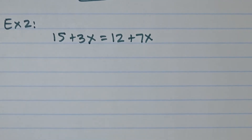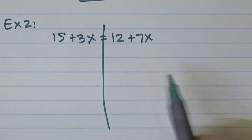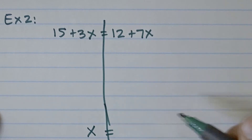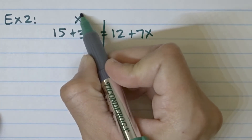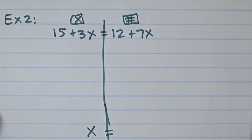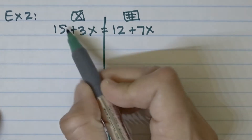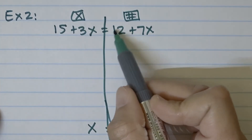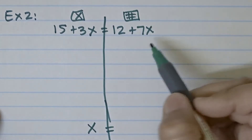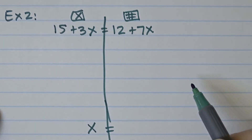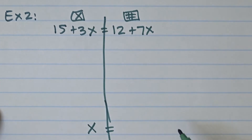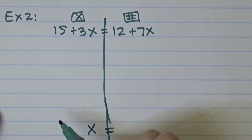With four terms, it won't really matter which side you choose for your x's — you're going to move two terms regardless. We'll keep x on the left side as usual practice. Checking each term: 15 is a number term that should be on the right — it's out of place. 3x is an x term in the correct place. 12 is a number term in the correct place. 7x is a variable term that should be on the left — it's out of place.